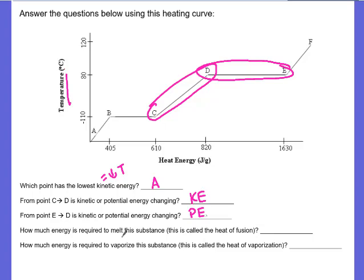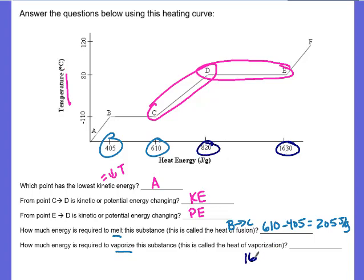How much heat is required to melt it? Well, melting was going from B to C. B is 405, C is 610. So, 610 minus 405 is a difference of 205 joules per gram. Vaporizing, you're going from 820 to 1630. So, 1630 minus 820, your heat of vaporization should have been 810 joules per gram.